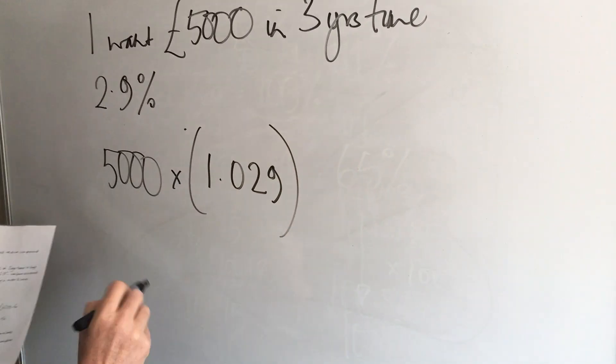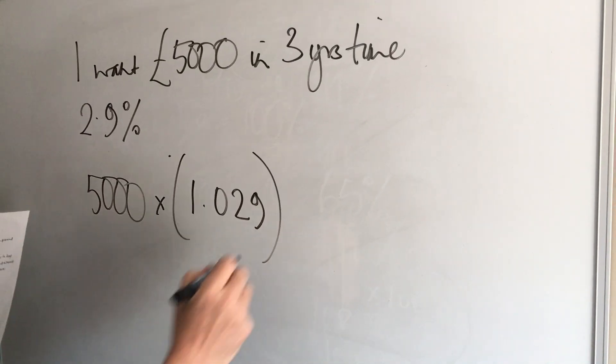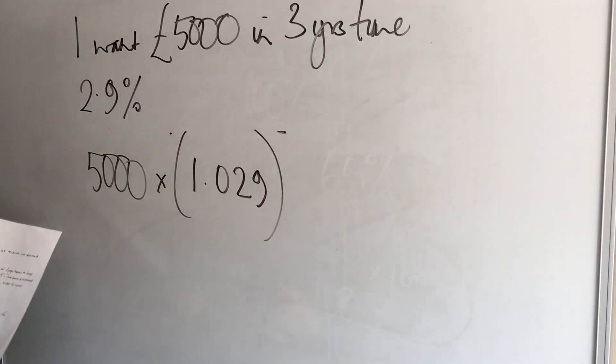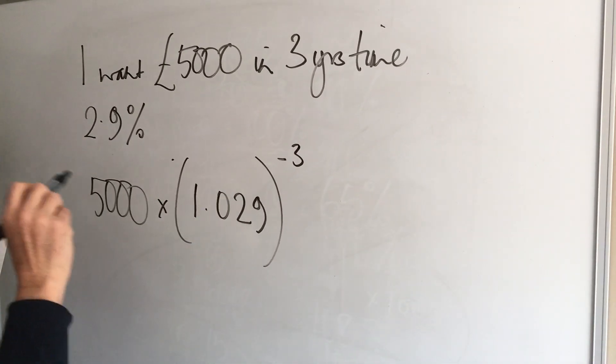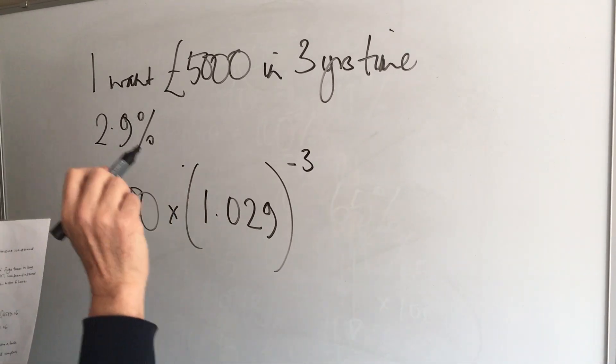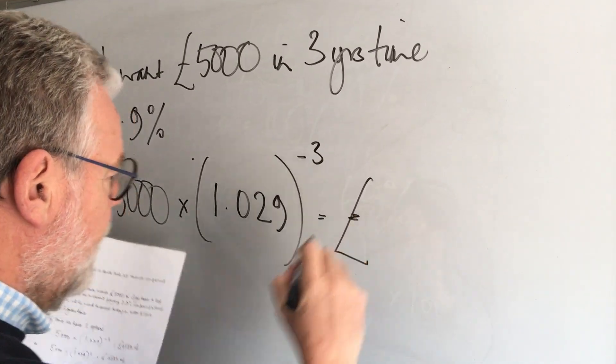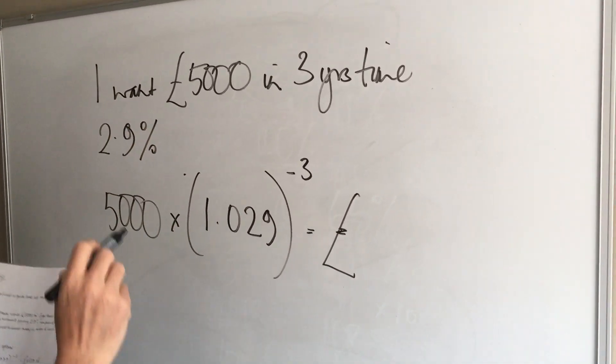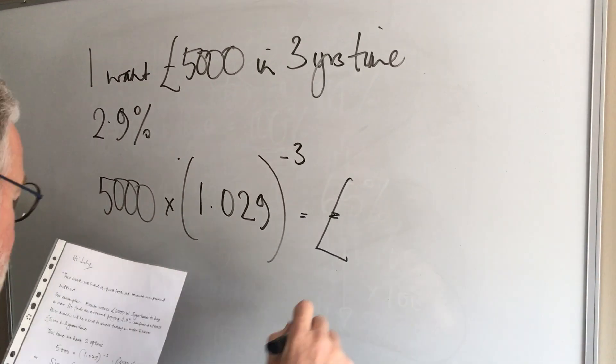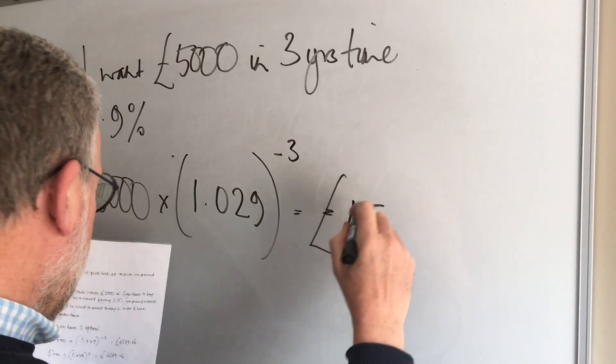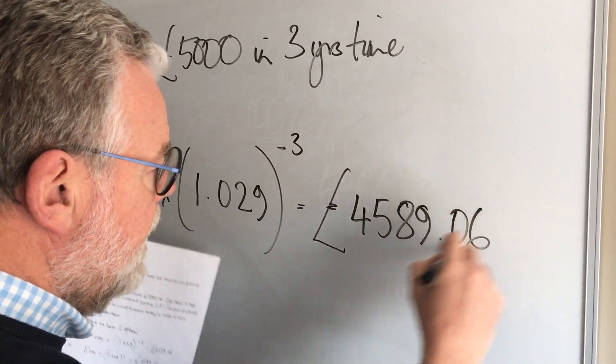Now notice this time because it's a reverse compound problem my indices for time is negative. So if I put £5,000 and multiply it by the multiplier to the power of negative three, it would tell me that if I want to have £5,000 in three years time at 2.9% interest today, I would have to put £4,589 and 6p in the bank.